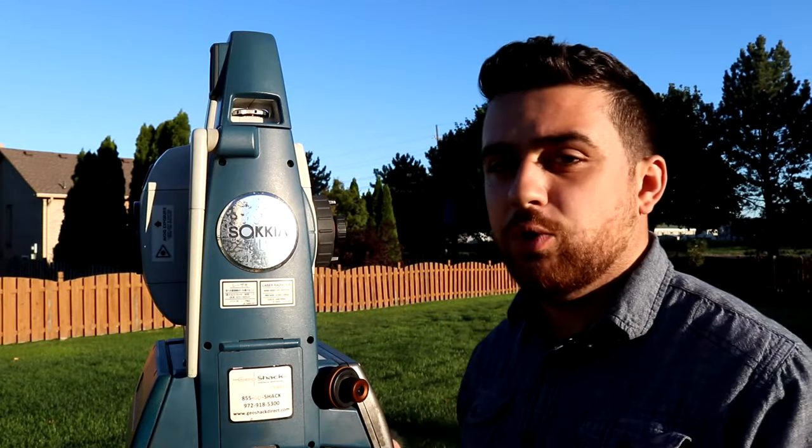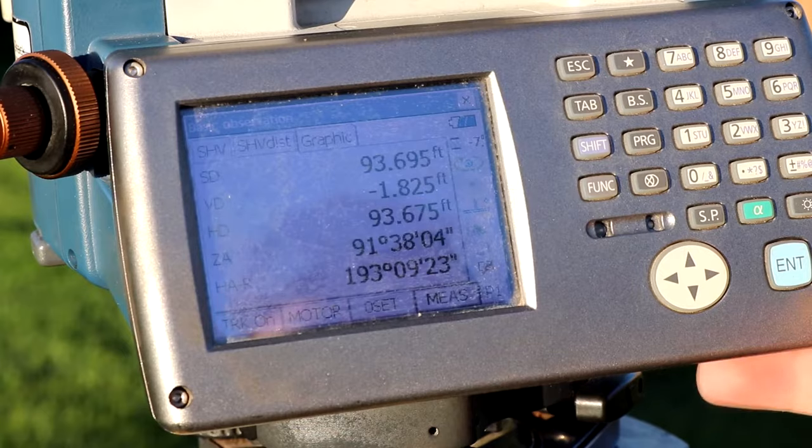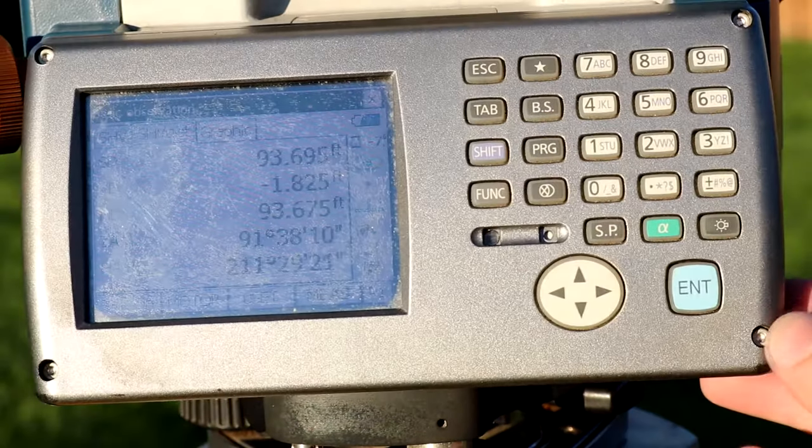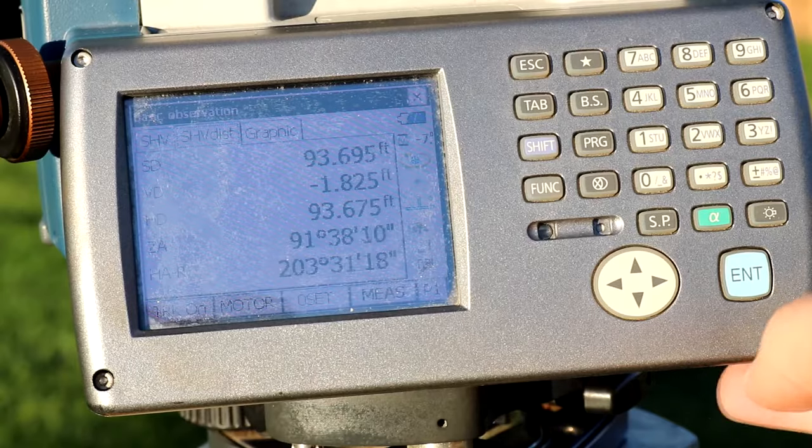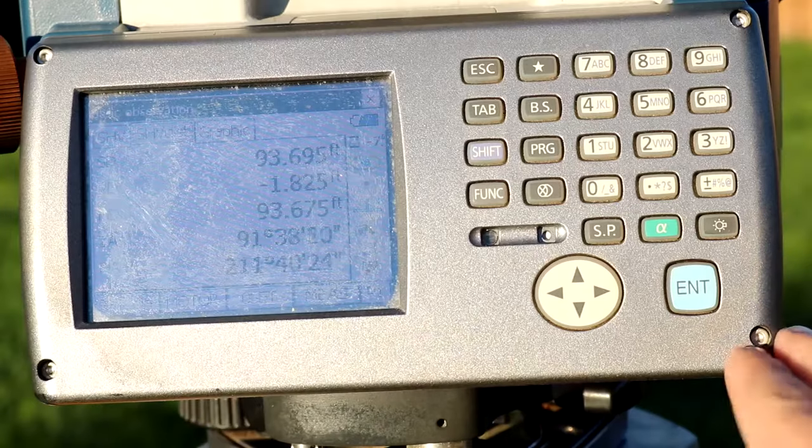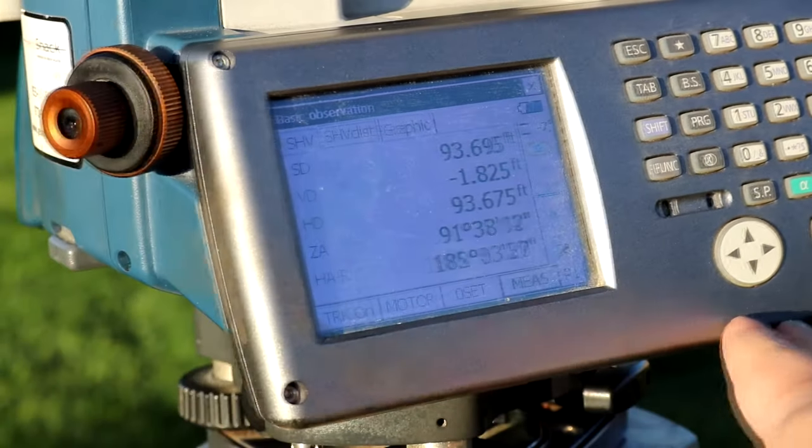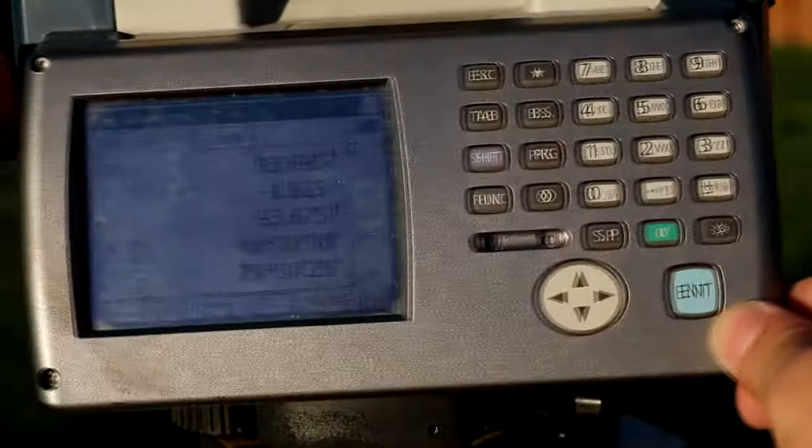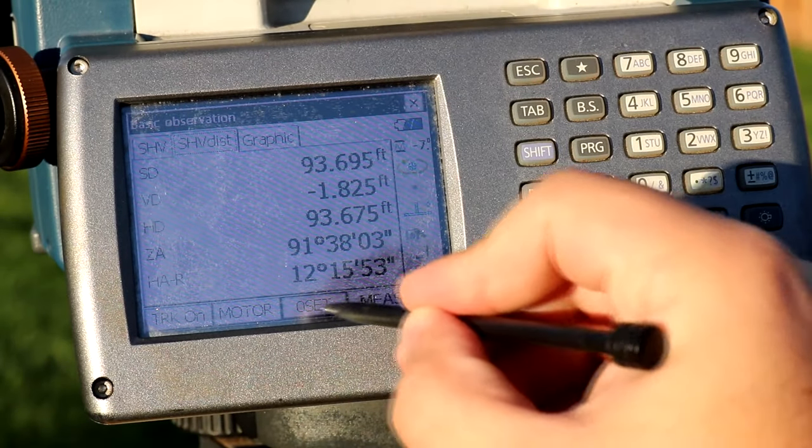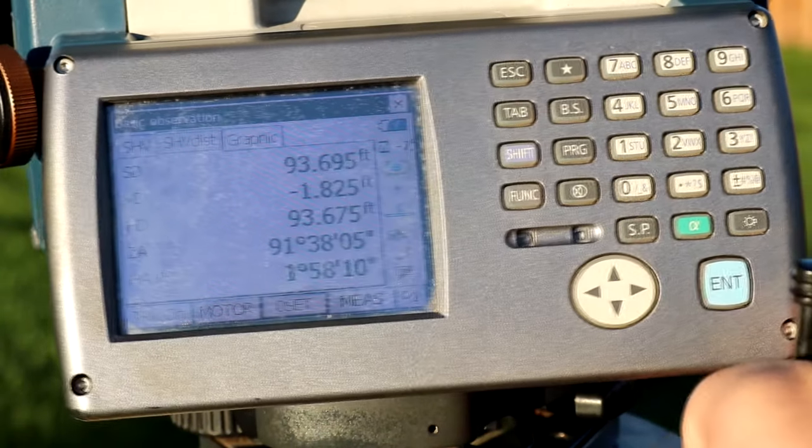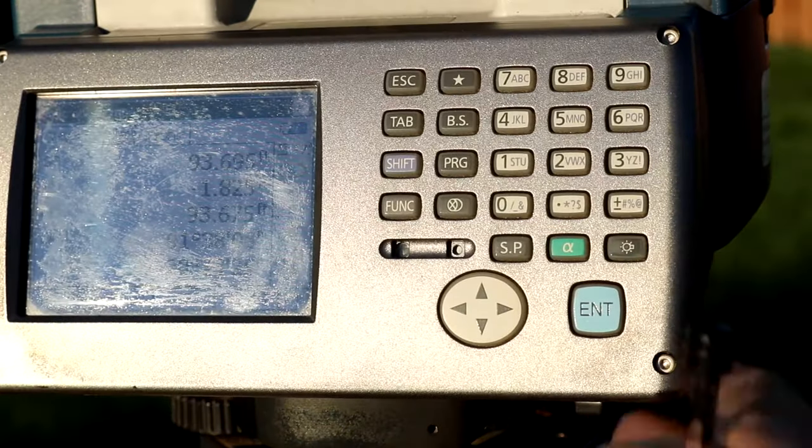You're zeroing out your location quite literally. Every time I move the total station left and right, you can see the angle changes just slightly. So we're able to capture to the nearest second the change in our angle. Once we find the location of where we want to be sighted, we can then set the angle to zero. And then any turning we do will reference that angle at zero degrees. So you're probably wondering what exactly are we going to use to sight these points?